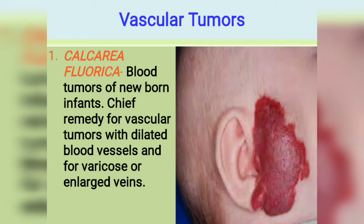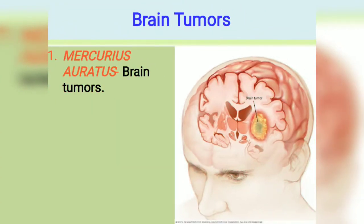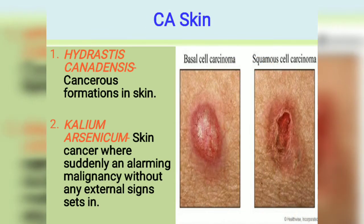For brain tumors in Boric, a single medicine is given and the medicine is Mercurius Auratus. Now let's talk about skin cancers. As we all know, there are three types of skin cancer: one is basal cell carcinoma, second is squamous cell carcinoma, and third is melanoma.